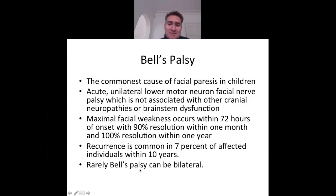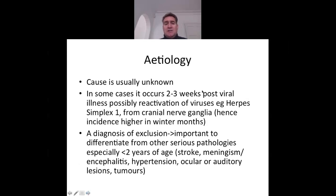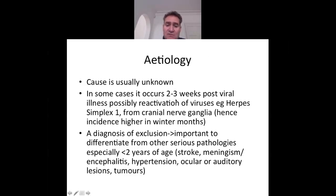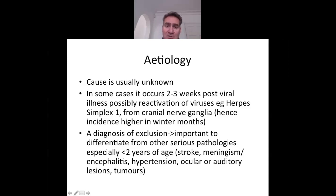Bell's palsy can rarely be bilateral. The cause is usually idiopathic, but in some cases it occurs two to three weeks post-viral illness, giving rise to the theory of reactivation of viruses such as herpes simplex 1 from cranial nerve ganglia — consistent with higher incidence in winter months. It is a diagnosis of exclusion, particularly important in children under two. Differentials include stroke, meningitis, encephalitis, hypertension, ocular or auditory lesions such as neurofibromatosis type 2 with acoustic neuromas, or osteopetrosis where thickened bone compresses the auditory canal.